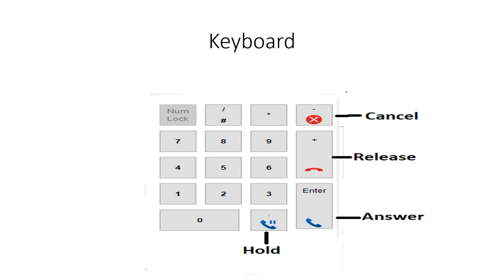A call would come in, you would hit Enter to answer the call, type in the extension you want it to go to, and if it's set up where you have to press Release — which is the default — you would hit Release and it sends the call along. If you hit the wrong extension, you can hit Cancel, recover the call, and start over.